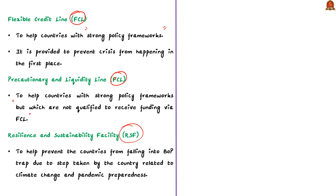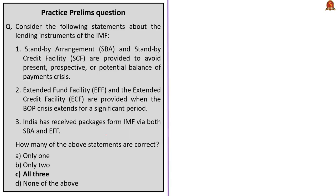Back to our discussion — here, out of the three statements, the first one and second one are correct as we have just seen. Regarding the third statement, India has received packages from the IMF via both SBA and EFF. In 1981, India received EFF funds, and between 1957 to 1991, India received SBA funds. The correct option is option C.